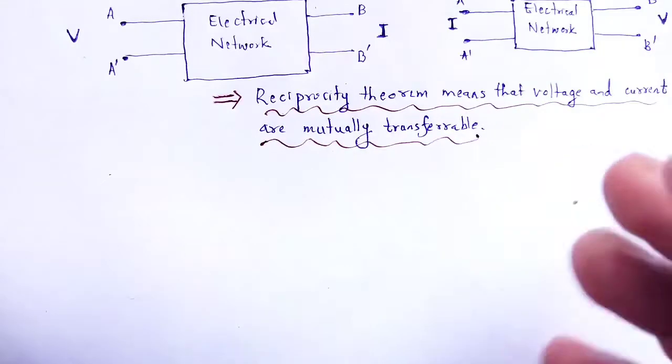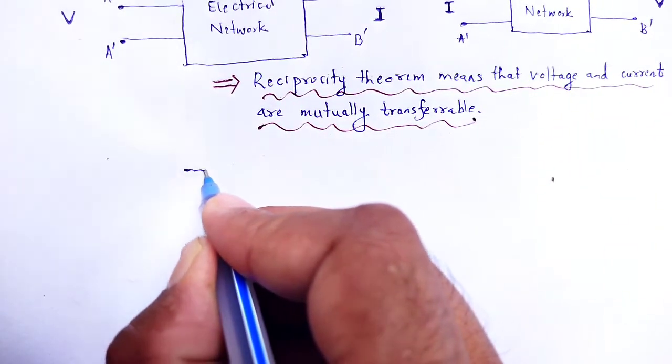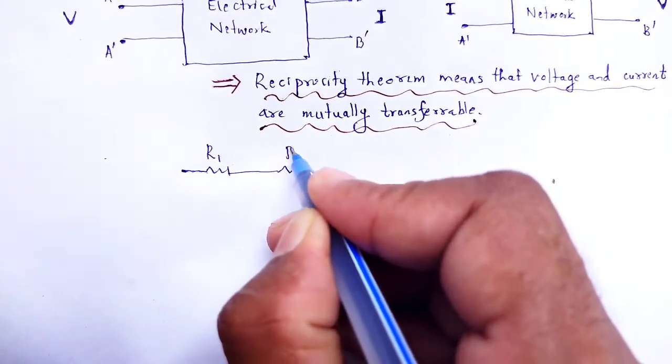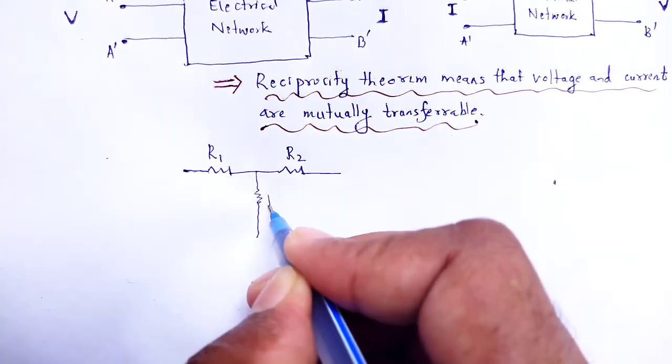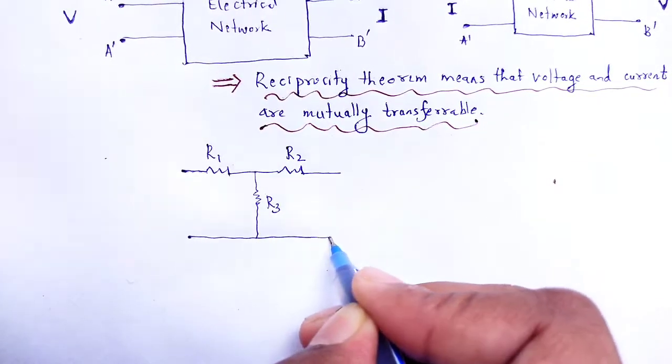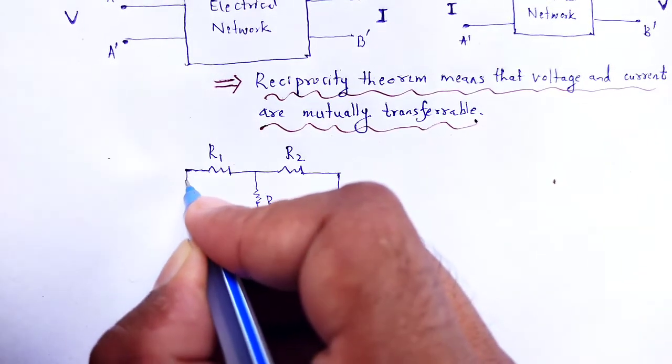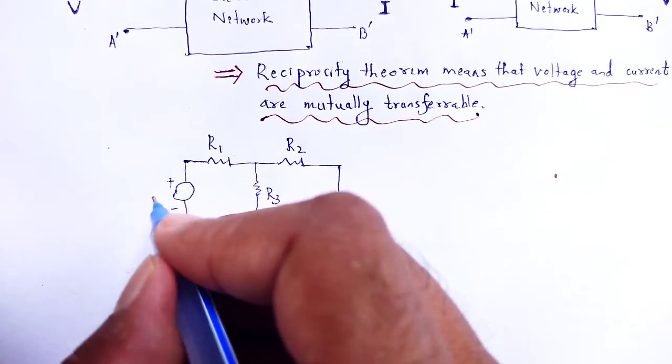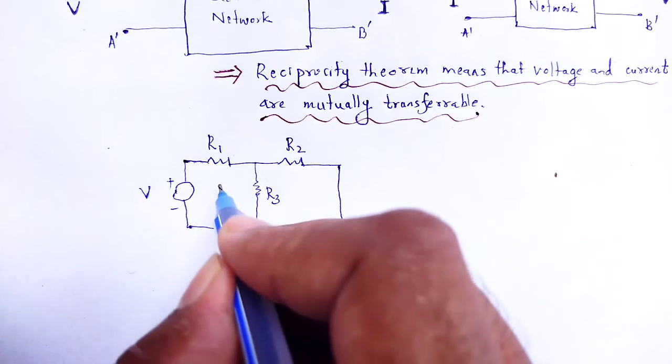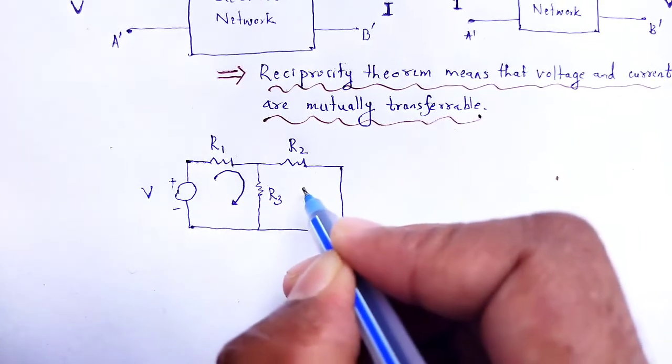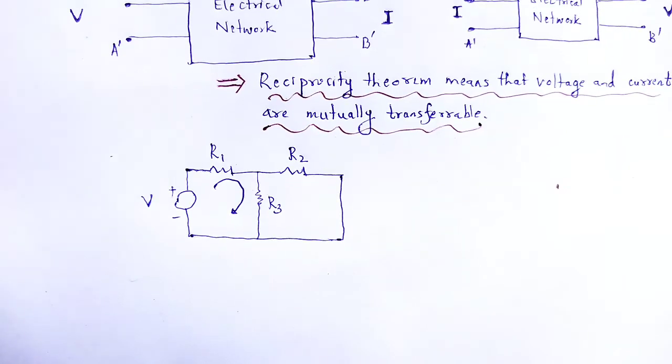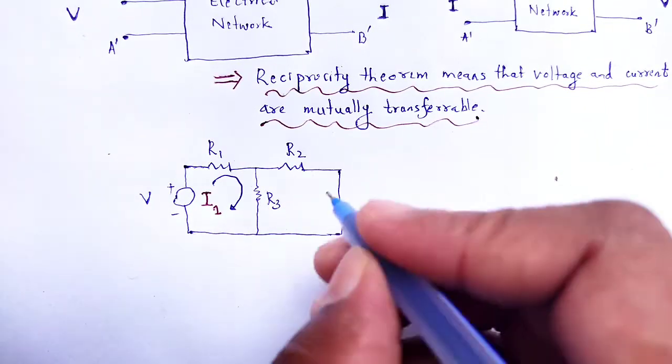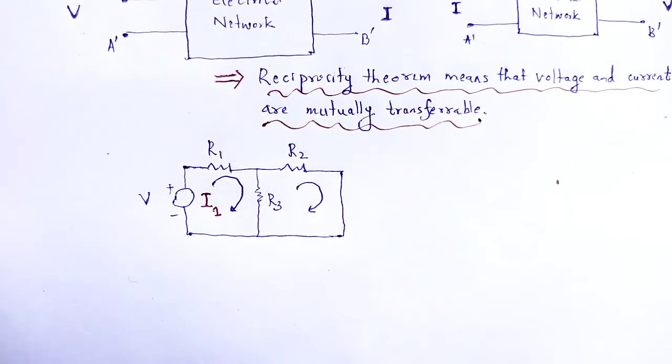So here, we have to consider an electrical network with resistance R1, resistance R2, resistance R3, and a potential is applied. Let the current in that part be I1 and current to that part be I2.